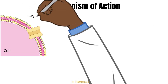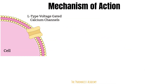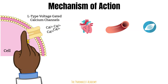Calcium channel blockers bind to the L-type voltage-gated calcium channels. L-type meaning it's long-acting, and voltage-gated meaning that this channel only opens and closes in response to changes in the cell's electrical voltage or action potential. This phenomenon plays an important role in cardiac cells, the smooth muscles that line the blood vessels, and skeletal muscles. Voltage-gated calcium channels can be found in all of these locations.